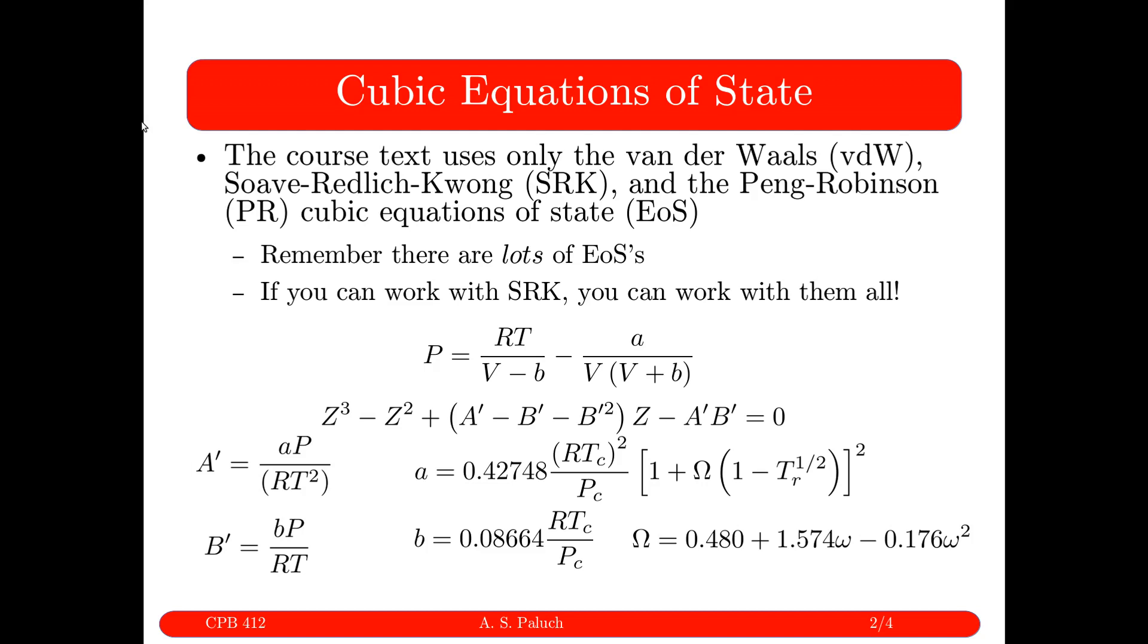In the textbook, we make use of van der Waals, SRK, and Peng-Robinson cubic equations of state. Remember, there's many more out there, but the general idea is, if you can work with these three cubic equations of state, you can work with any of them. How you would choose one for a particular application is going to be based on experience. You can consult Properties of Gases and Liquids by Poling, Prausnitz, and O'Connell. Here we'll just work with the SRK equation of state, but the principles are true regardless of your equation of state of interest. Here I just have our SRK equation of state, so P equals RT over V minus B minus A over V times V plus B.